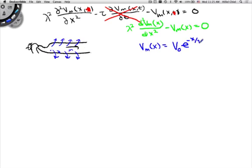Lambda is this space constant. We're going to write that down: lambda equals space constant.